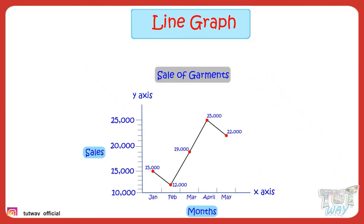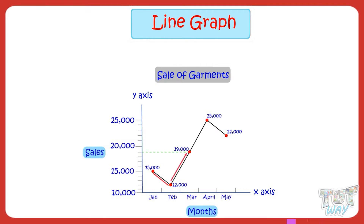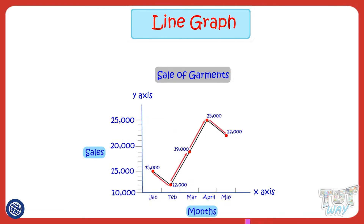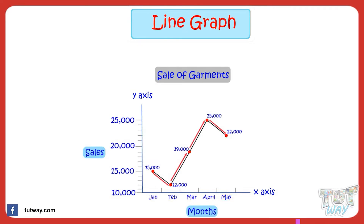Now let's read the line graph. Graph says sales in January is 15,000 garments, whereas sales in February reduced to 12,000, which is 3,000 lesser than January. And then sales again increased to 19,000 garments in March, and sales further increased to 25,000 garments in April — that is, the sales reached its peak point, which is 25,000 garments. And sale decreased by 3,000 and is 22,000 in May. So we can clearly see the trends using the peaks and dips shown by a line graph.